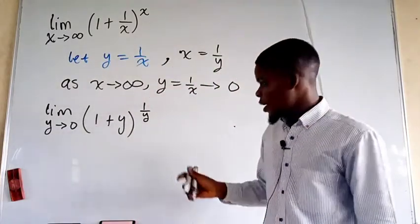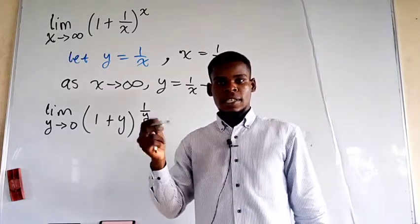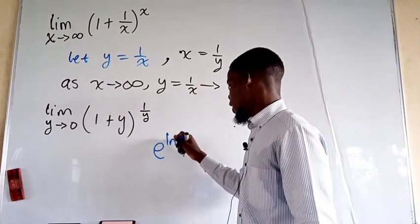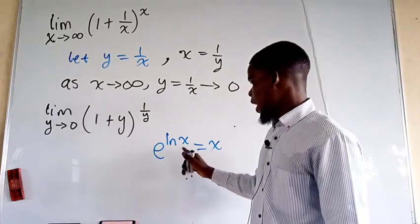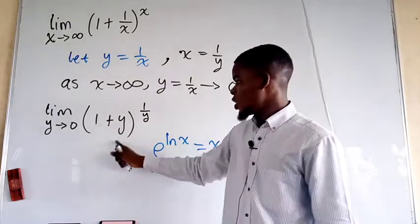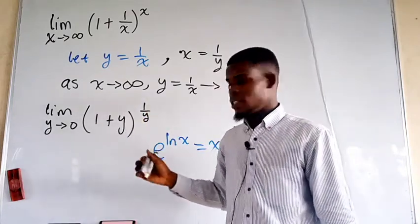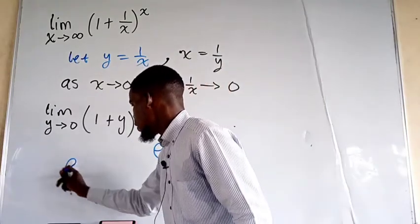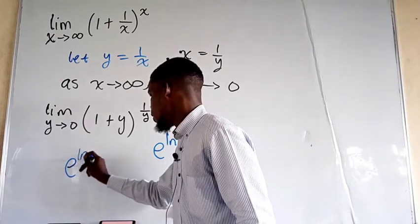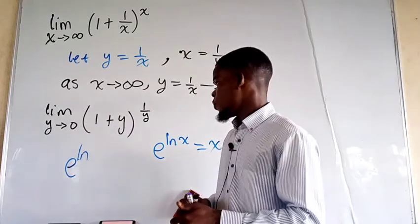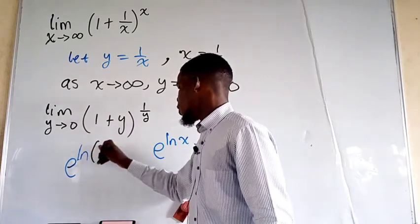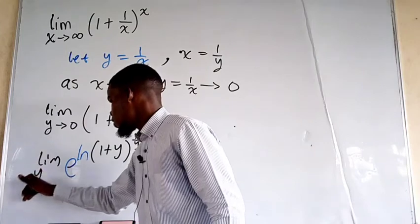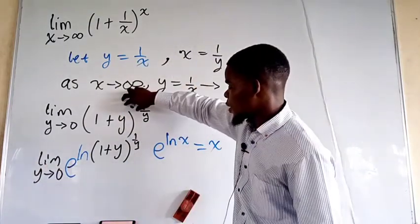Now, you know that the exponential e and the natural logarithm are inverses of each other. So if I take e to the power of ln(x), we get back x. So I can rewrite the whole function part as e raised to the power of the natural log of (1 + y) raised to the power 1 over y, and we take the limit as y tends to zero. I've written this as this — they are the same.